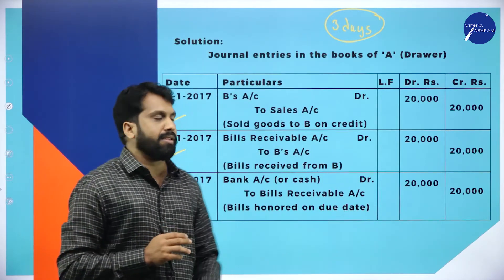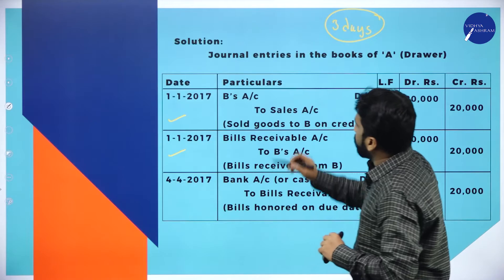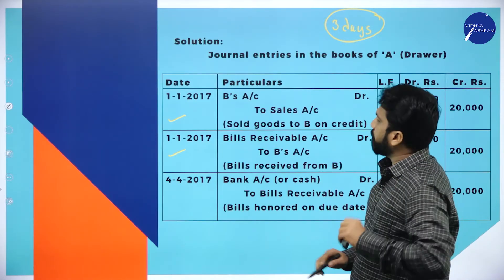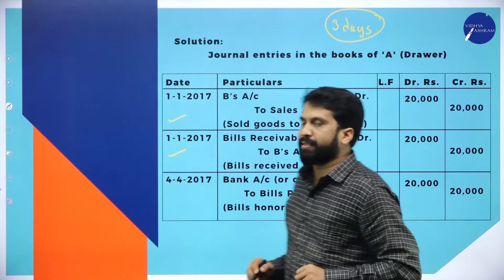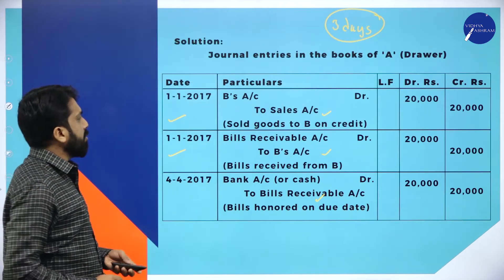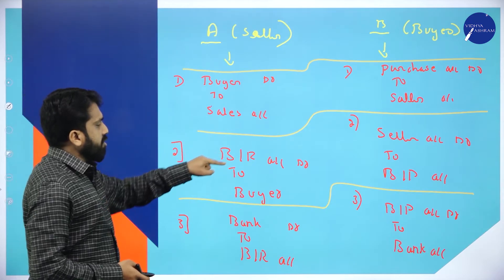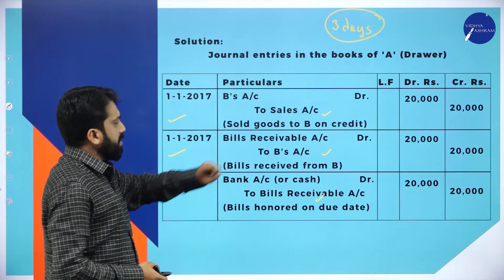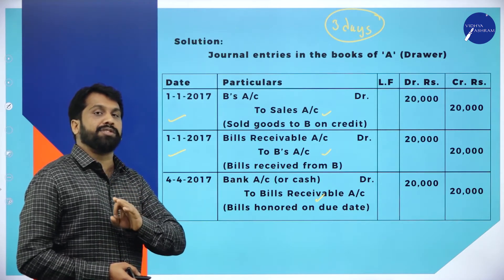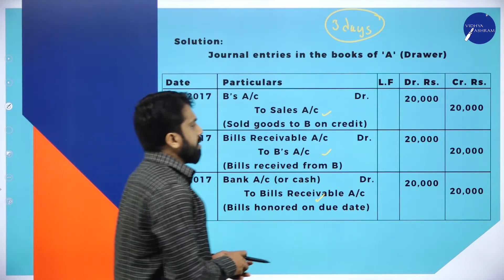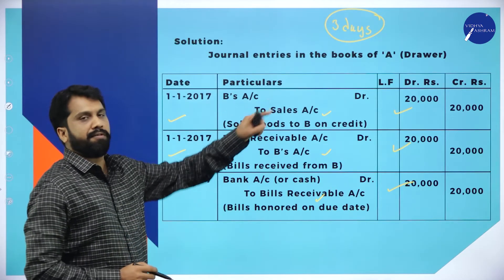In the examination you have to add only three days grace period. Now, who is the buyer? B. So the entries are: B account to Sales account; Bills Receivable account to B; Bank account to Bills Receivable. The amount is 20,000 for all three entries. This is all about journal entries in the books of A.